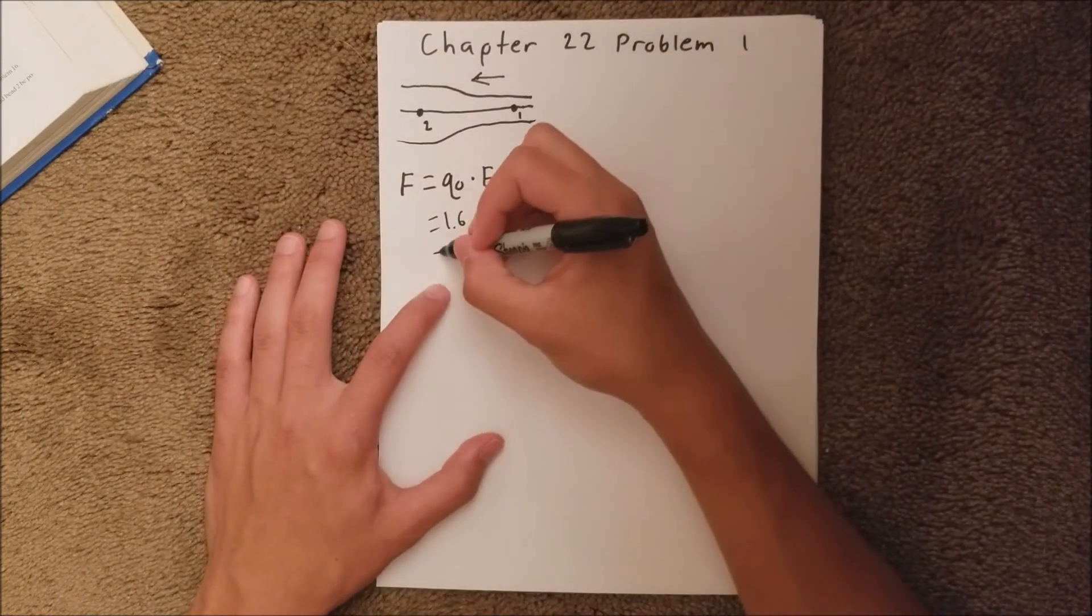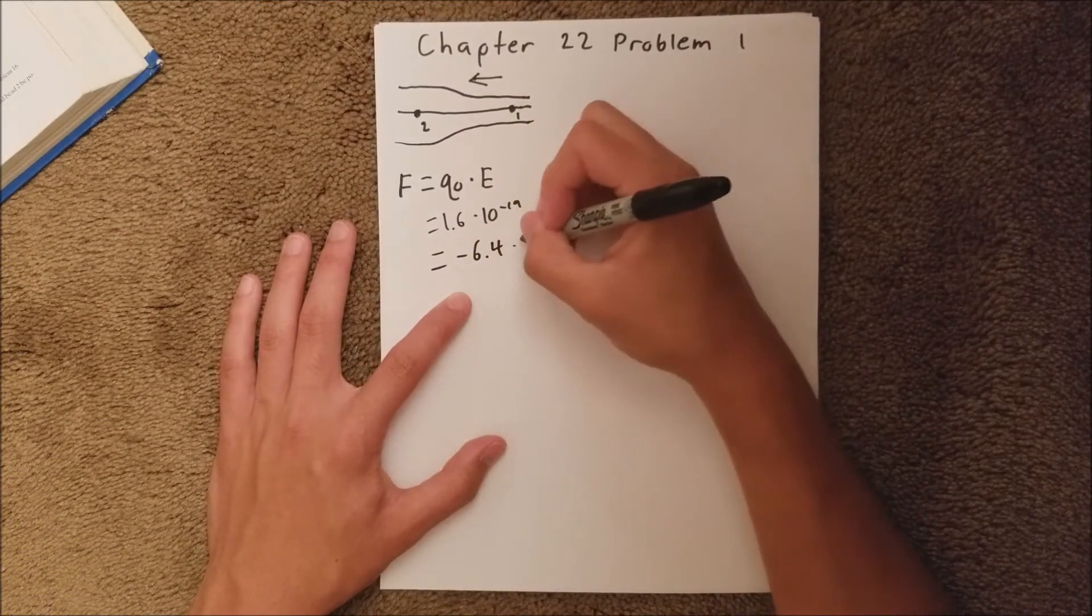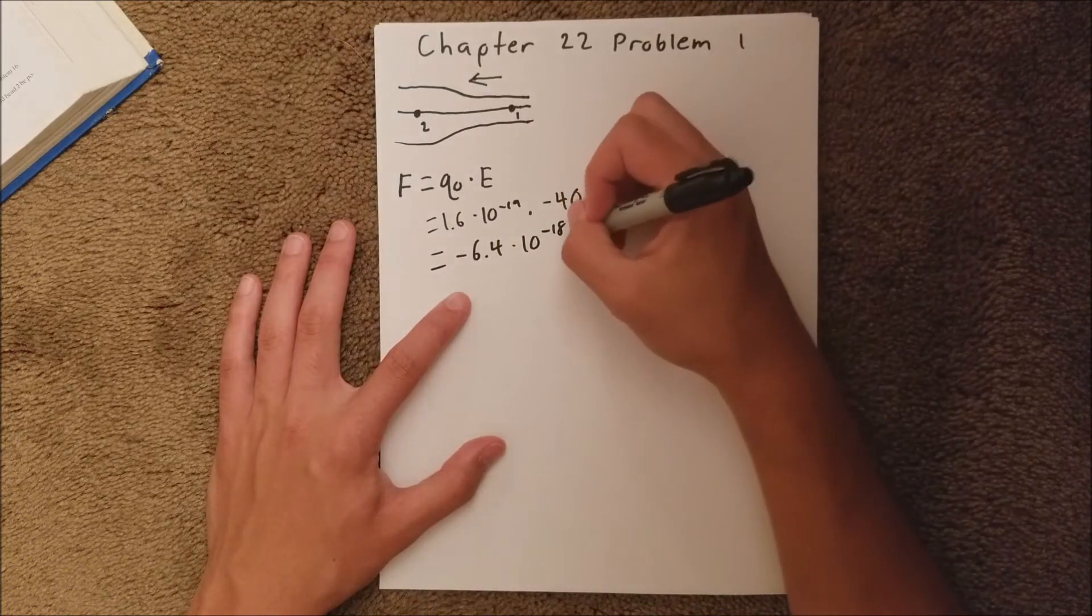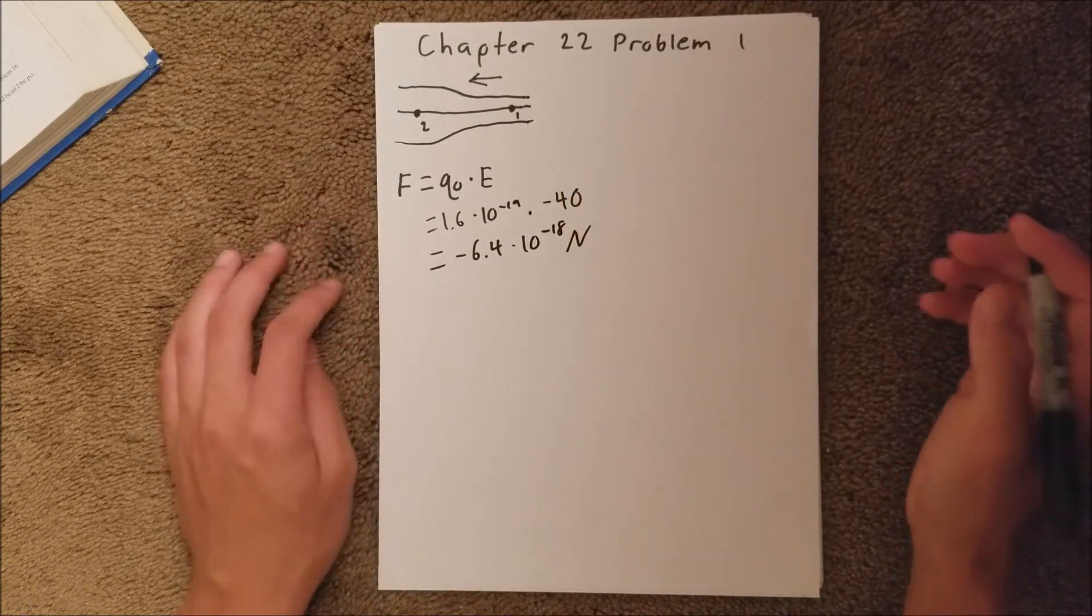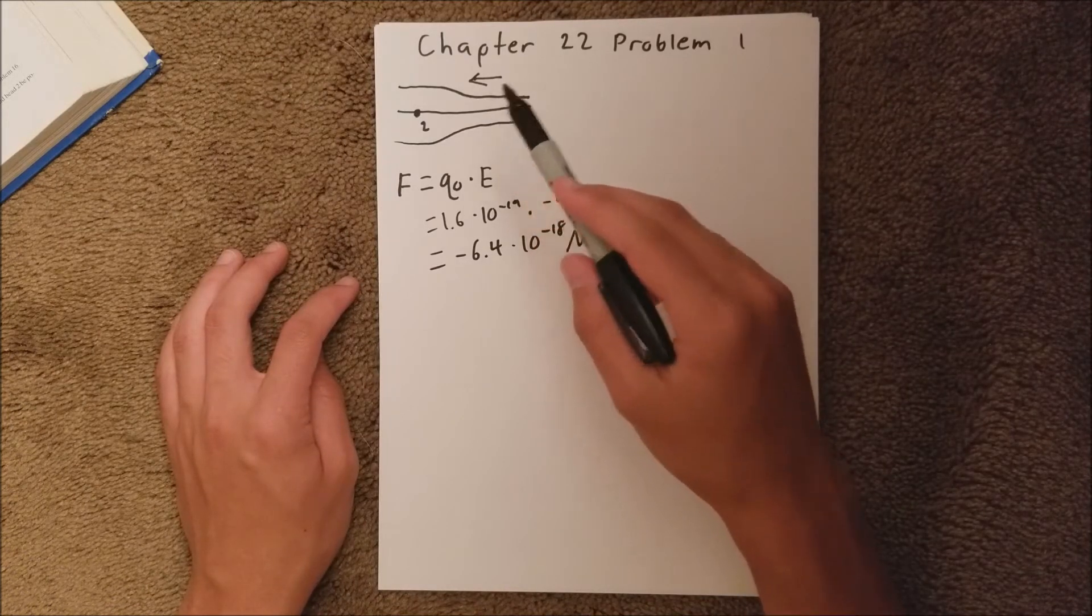When you put that in your calculator, you should get negative 6.4 times 10 to the negative 18th newtons. You just got to make sure you include the direction of the field.